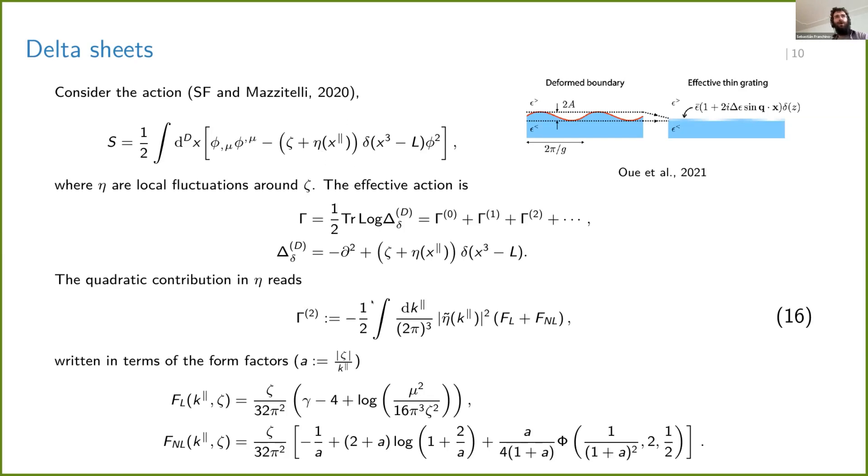As you may know, the effective action is just given by the quantum part, it's given by one half the trace log of the Laplacian operator, which in this case is given by the delta. And you can also go on and compute the quadratic in eta term,